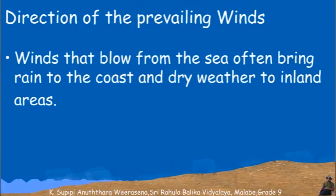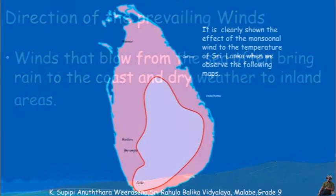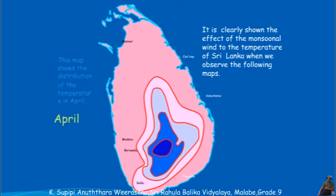Direction of prevailing winds: winds that flow from the sea often bring rain to the coast and dry weather to inland areas. The effect of the monsoonal wind on the temperature of Sri Lanka can be clearly seen in the following maps.